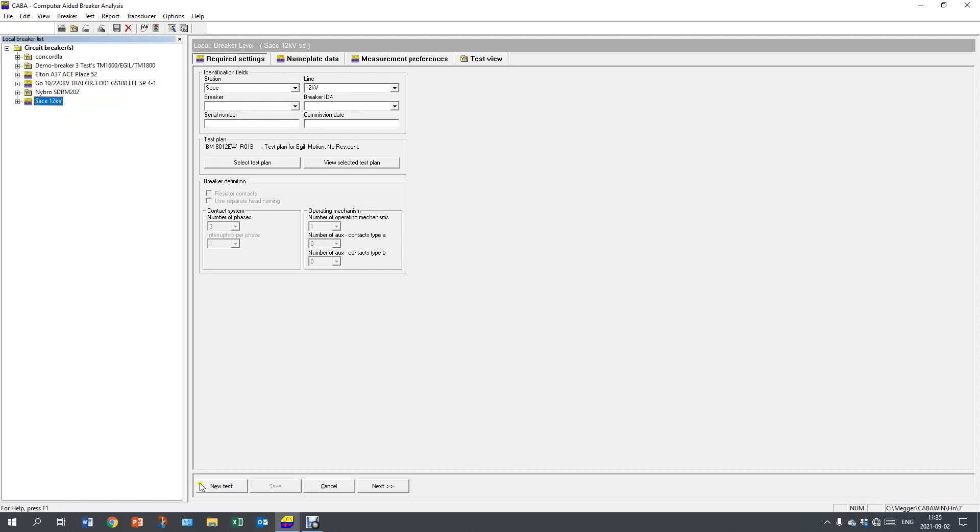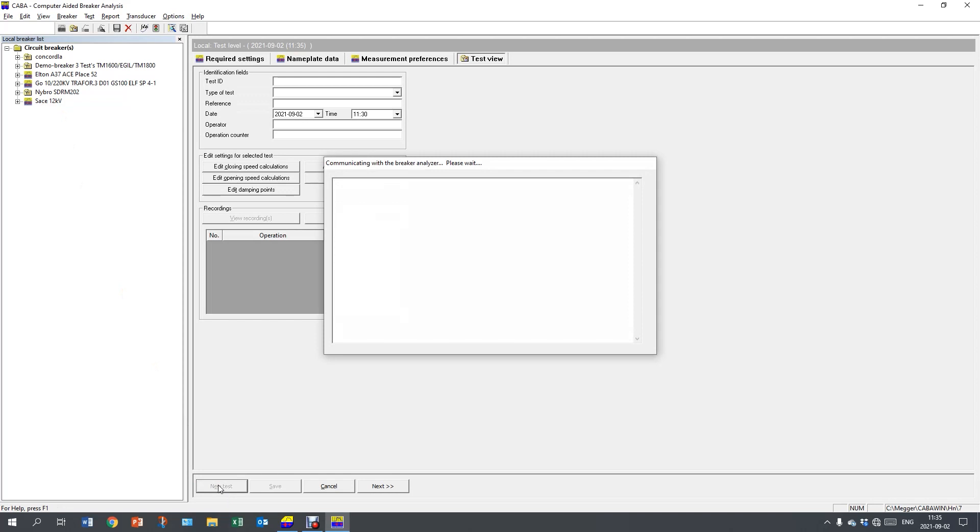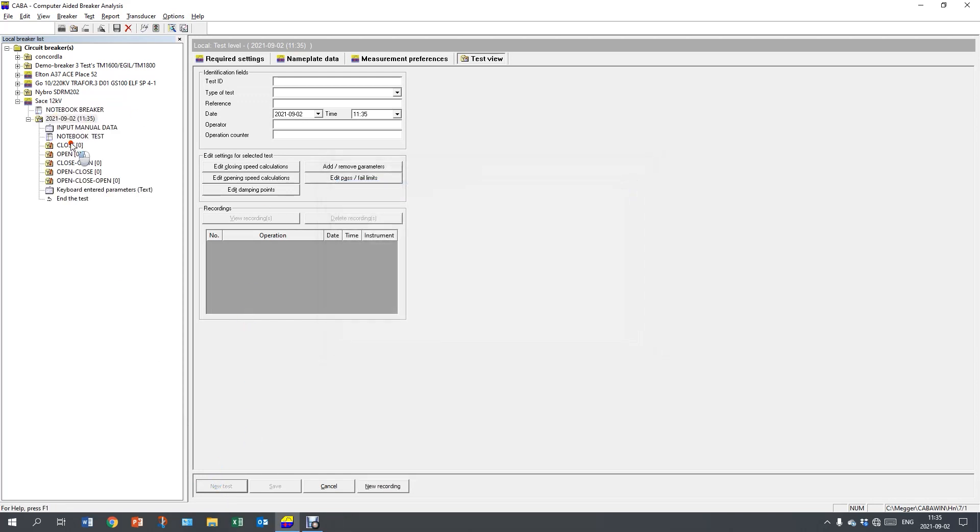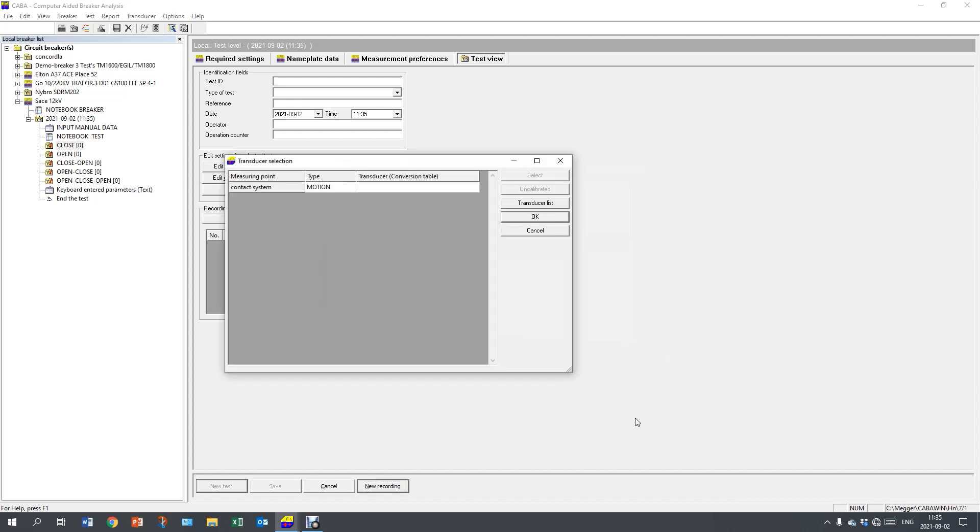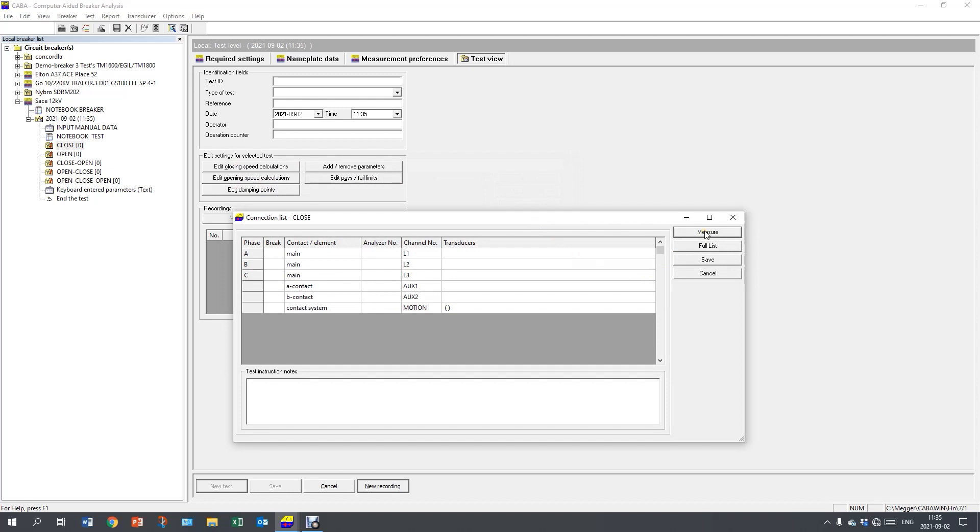I continue with creating a new test and start with a close operation. I push new recording and select uncalibrated transducer and OK. I push measure and we'll continue with controlling the breaker from the analyzer.